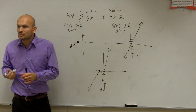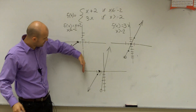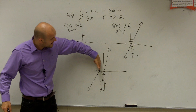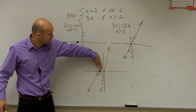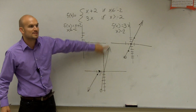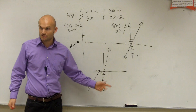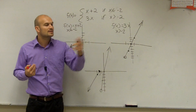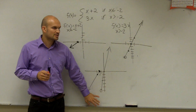Now we look at the domain of this piecewise function. Does my domain include all x values again? Yes, because looking from all the way left, the first piece goes to infinity to the left. At negative 2, the first piece ends and the second piece picks up with an open dot and continues to positive infinity. So the domain of this piecewise function is negative infinity to infinity — it's the combination of the two functions together as a piecewise.